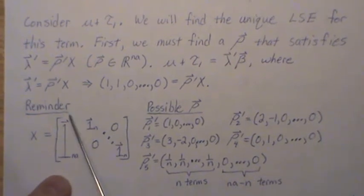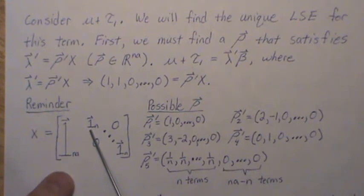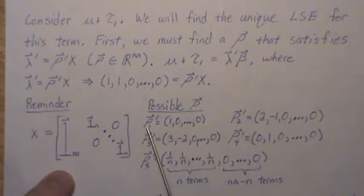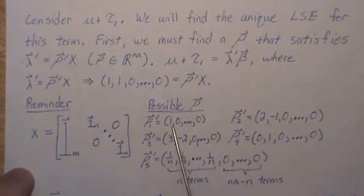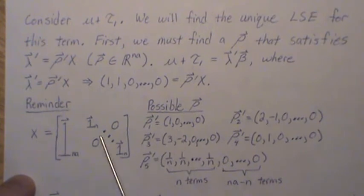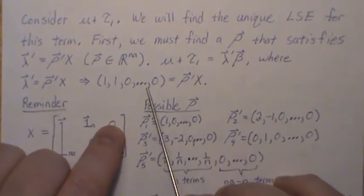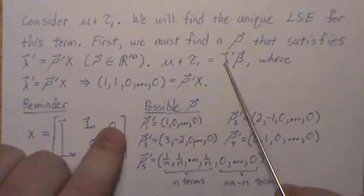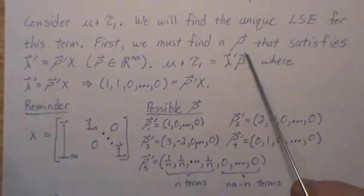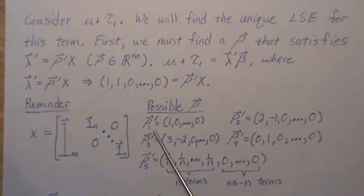Here's the design matrix. We have a column of 1s, and then we have 1s that represent when the observation comes from treatment 1, treatment 2, all the way to treatment N. If we look at row 1, it's a 1 and then the rest 0s. When we do this multiplication, it picks off that first row, which is 1, 1, and the rest 0s, exactly what we need. That's the λ that picks off μ and τ₁. So if we use row 1, that is a possibility.